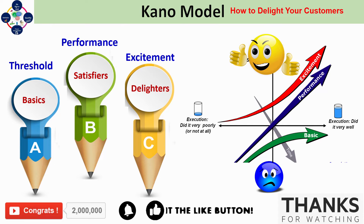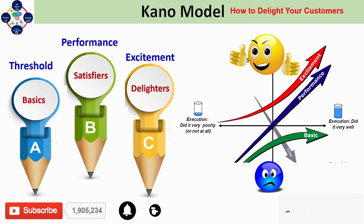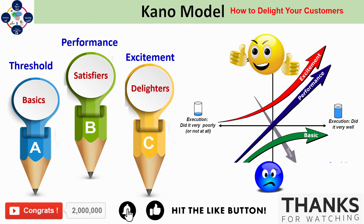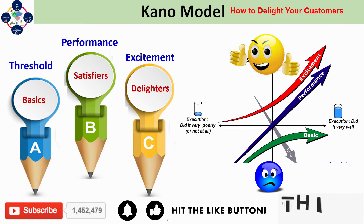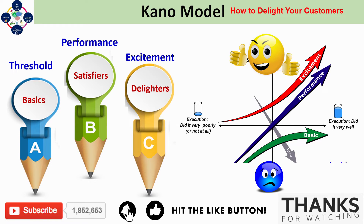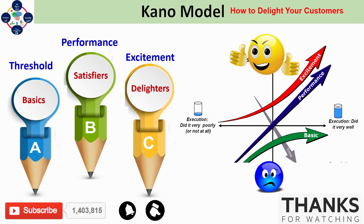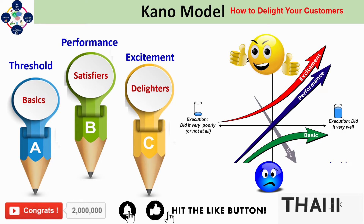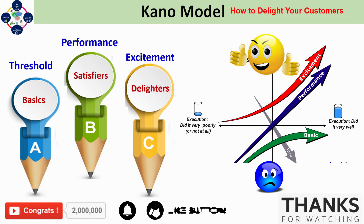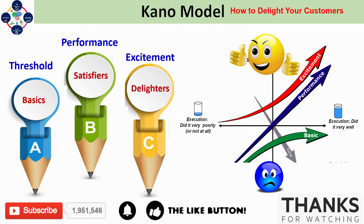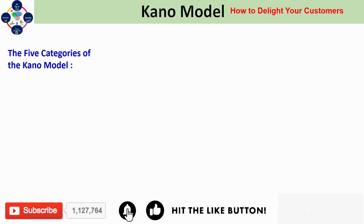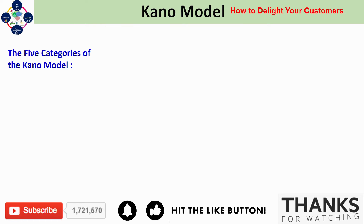If a product's features don't meet a customer's threshold attributes, their satisfaction level will be very low. However, even if you fully deliver on those, you won't impress customers that much. Most products compete on performance attributes, where customers weigh one product against another and judge satisfaction based on available features. But a customer may discover an excitement attribute that really appeals to them and gives high satisfaction even if it isn't perfectly implemented.